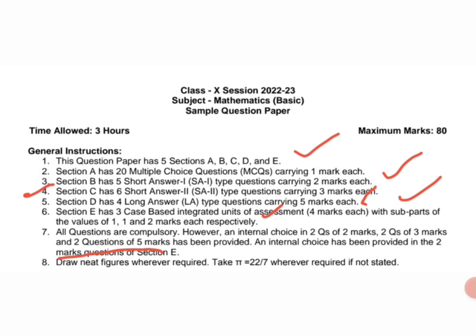Internal choice has been provided in two marks questions of Section E. Draw neat figures wherever required and take pi 22 upon 7 whenever required if not stated.